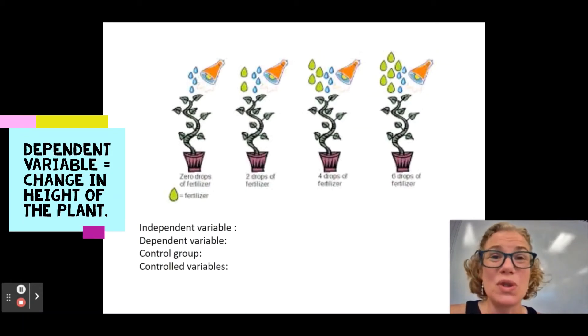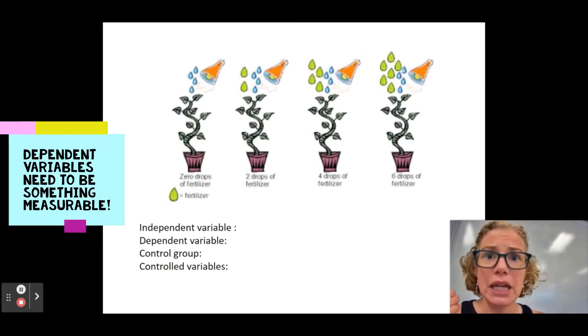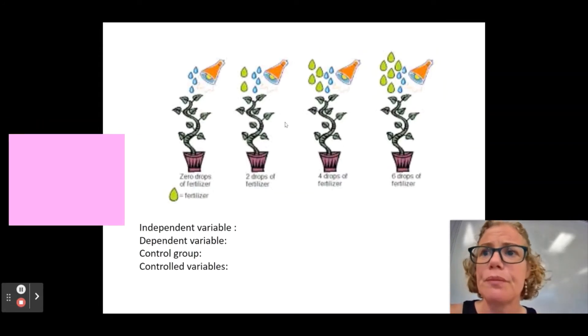I suppose you could do number of leaves as a dependent variable. But you want to make sure it's measurable. Okay? And that's always something kids struggle with a little bit is in their dependent variable and naming it, make sure it's something that you can come up with numerical data. It should be quantitative data. Quantitative means like numerical data.